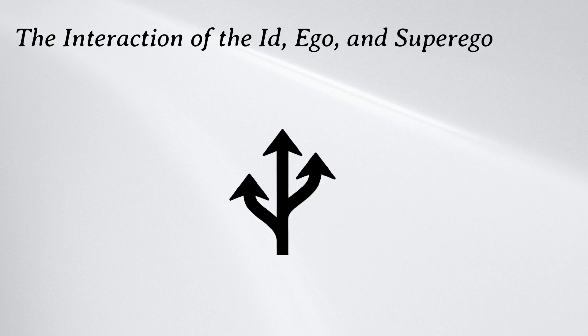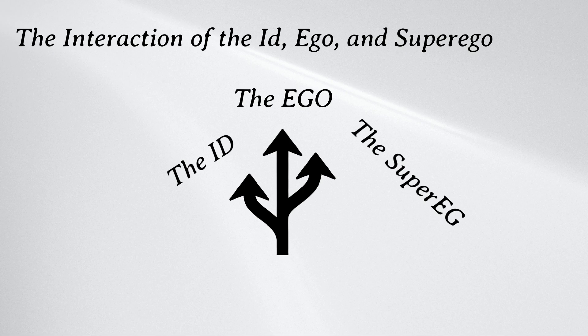The interaction of the ID, Ego, and Superego. When talking about the ID, the Ego, and the Superego, it is important to remember that these are not three separate entities with clearly defined boundaries. These aspects are dynamic and always interact to influence an individual's overall personality and behavior.